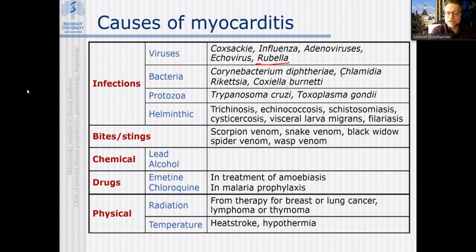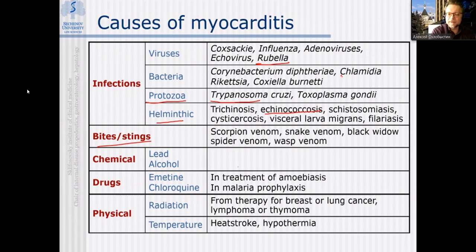Quite rarely, at least in a European population, myocarditis may be of protozoal origin — for instance in the case of invasion by Trypanosoma or Toxoplasma. Helminths may also result in affection of myocardium: in Siberia it may be echinococcal affection, trichinosis, or schistosomiasis. Sometimes it may be associated with stings of certain insects, spiders, or venoms — such as spider venom or scorpion venom — which may result in toxicity affecting myocardium.